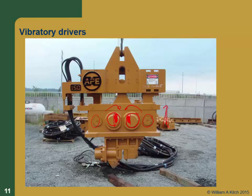These things can be really large. If you go to the APE website, they had a big one called King Kong, and they put eight of them together to drive something like a 36-foot diameter steel pipe for a caisson. Down at the bottom there's a clamping mechanism — a hydraulic ram that grabs the sheet pile and squeezes it. You can use these for extraction too, which is one of the nice things about vibratory hammers.